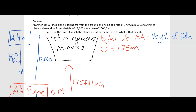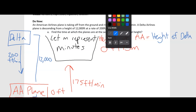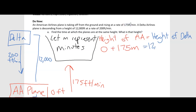One minute after the plane has taken off it will be at 175 feet. Two minutes after the plane takes off we would multiply 175 by 2, and so on. The height of Delta — we know that starts off at 12,000. The key thing here is that it's descending, so we're taking away feet from our initial height at 200 feet per minute, so 200M. If it's been descending for 4 minutes it would be 200 times 4, and we would subtract that from 12,000.